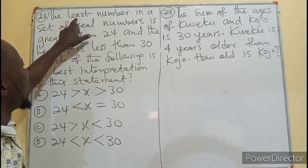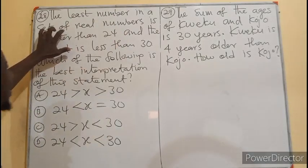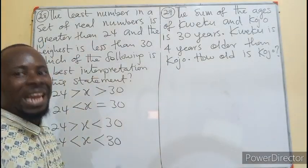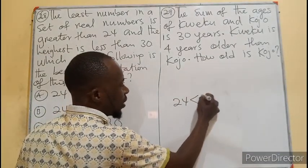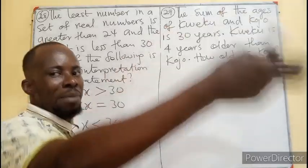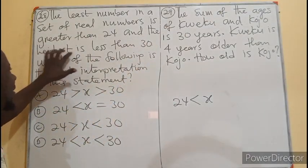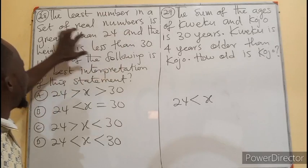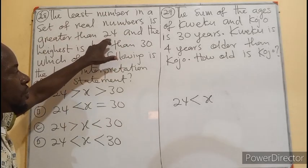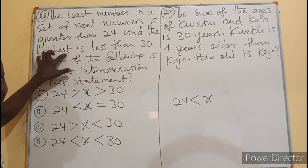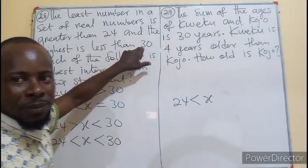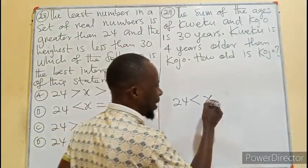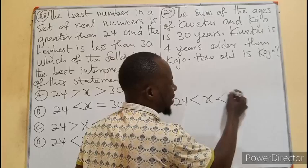The least number in the set of real numbers is greater than 24, meaning 24 is less than the number. So 24 is less than those numbers. And the highest among those numbers is less than 30, meaning 30 is also greater than those numbers. So x must be less than 30.